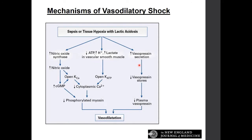Another pathway for vasodilation: in patients with shock or increased lactic acid, we may see increased vasopressin secretion. This ultimately depletes vasopressin stores, which provide vascular tone. The body is then unable to provide proper tissue perfusion.